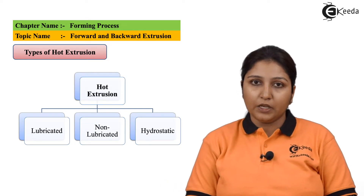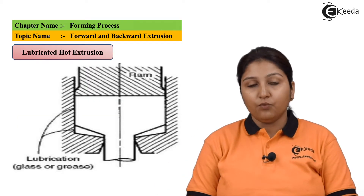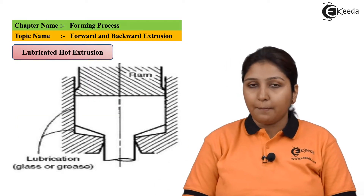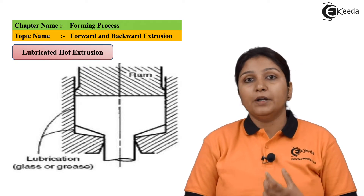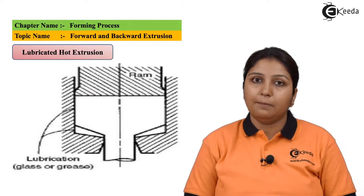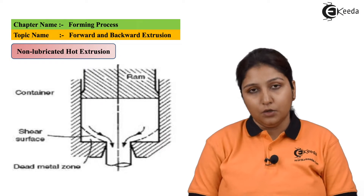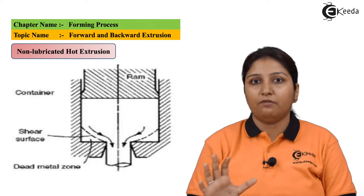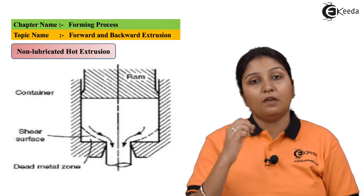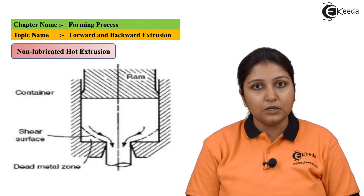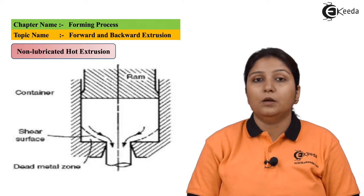In the lubrication type, you use a normal ram and a normal opening, but the whole arrangement has some kind of grease or lubrication so that the material flows out easily. In the non-lubrication system, you don't have grease or glass to help the material come out. You have your normal ram and normal system with a dead metal zone, which helps the material come out easily.